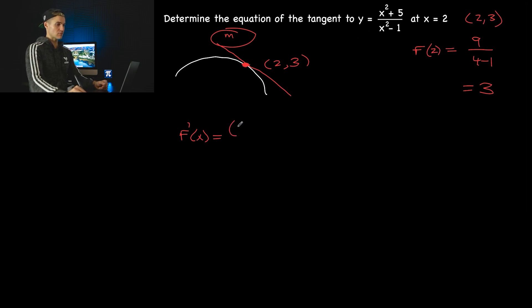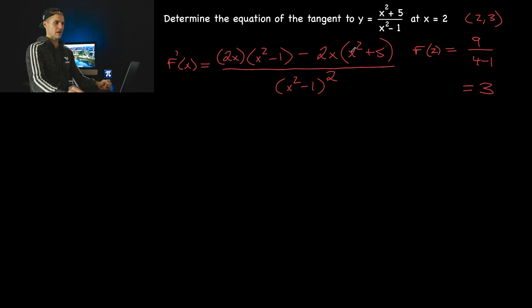So taking the derivative of the top, that would be 2x times the bottom minus the derivative of the bottom times the top like that. And that right there is going to be all over the bottom, x squared minus 1 squared. Now from here, you can simplify this if you want. You could also just plug in that x value of 2 here in this unsimplified derivative because we're finding the equation. They're not asking us to find a simplified expression for the derivative.